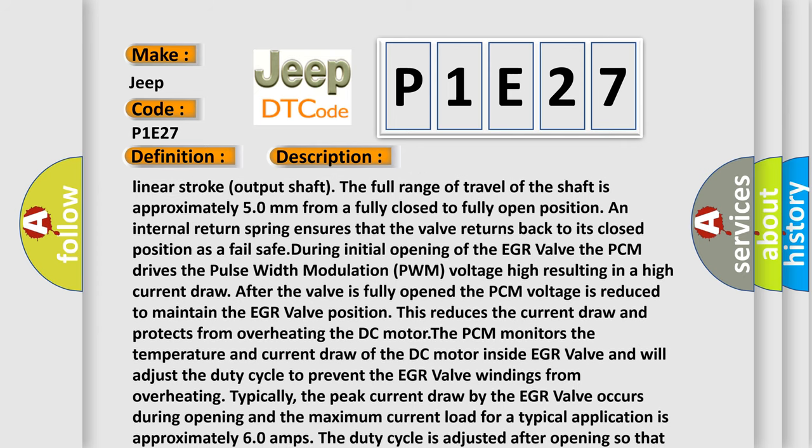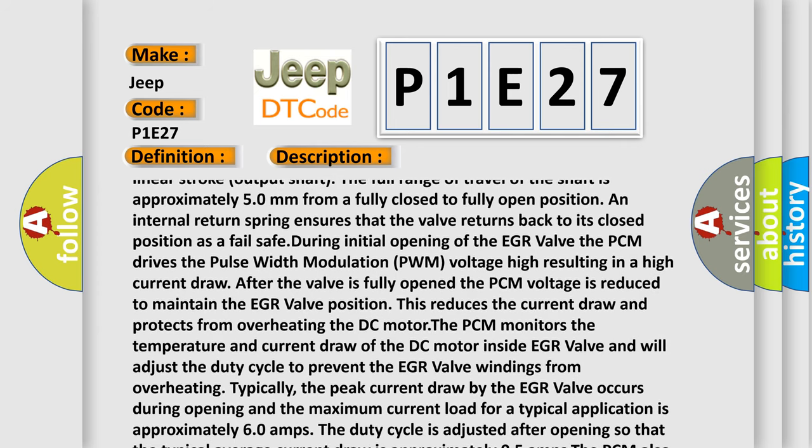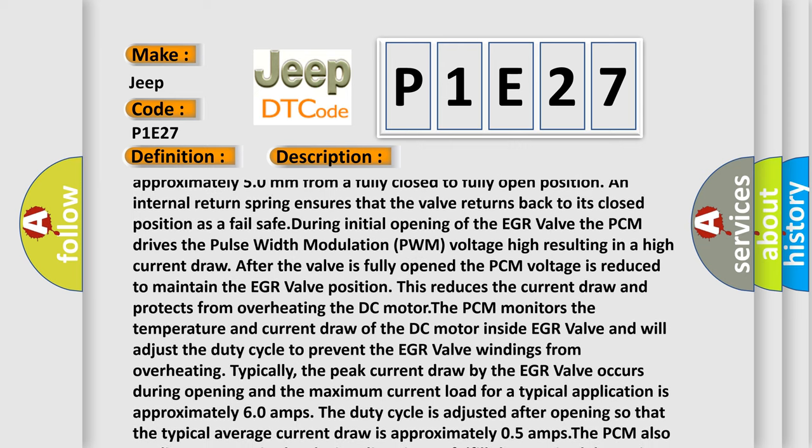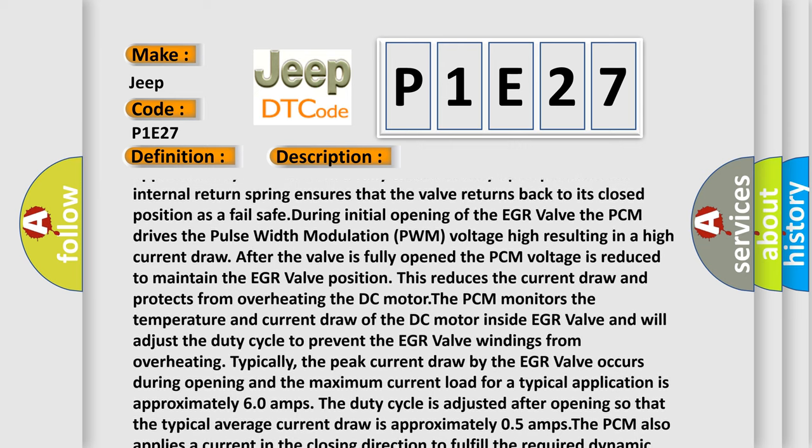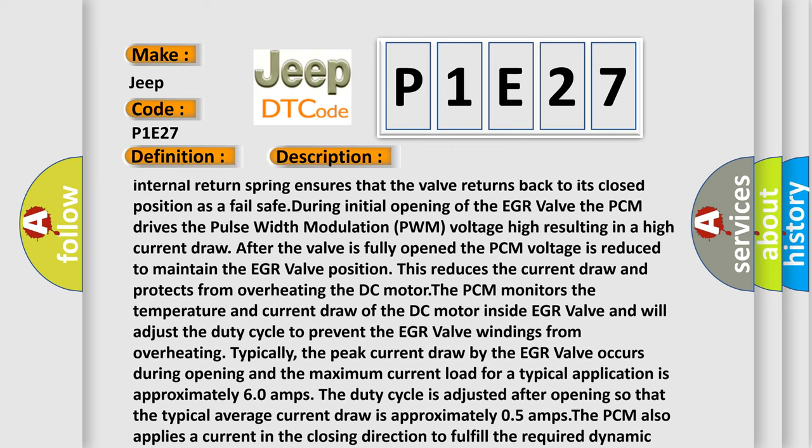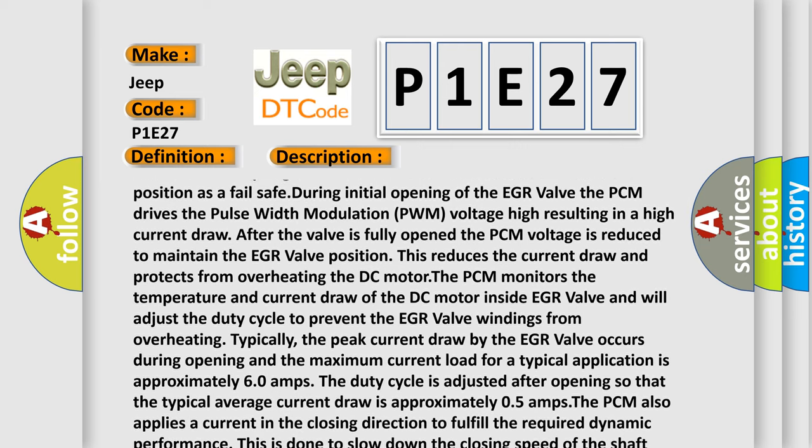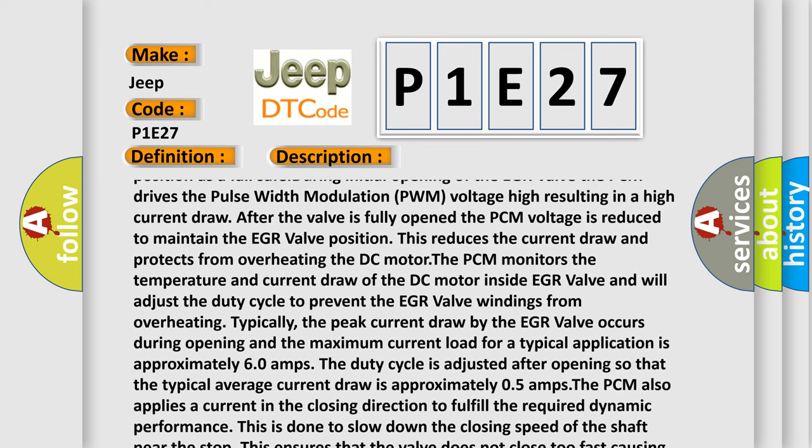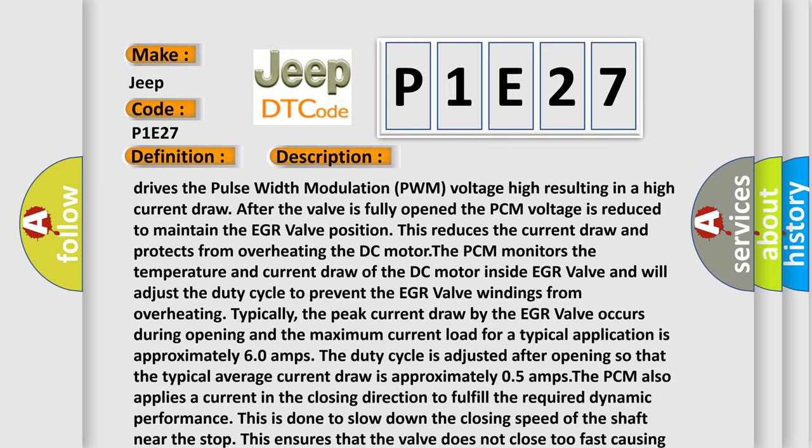After the valve is fully opened, the PCM voltage is reduced to maintain the EGR valve position. This reduces the current draw and protects from overheating the DC motor. The PCM monitors the temperature and current draw of the DC motor inside EGR valve and will adjust the duty cycle to prevent the EGR valve windings from overheating.